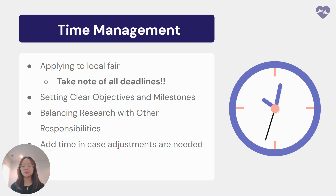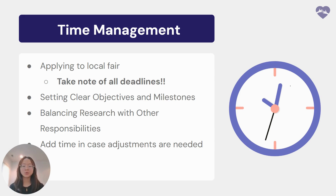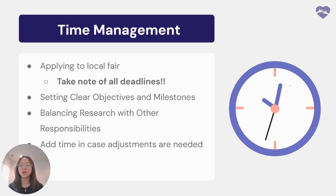Let's break this down into a few key points. First, if you're applying to a local fair, competition, or conference, it's important to take note of all deadlines. These could be submission deadlines, project progress checks, or any requirements related to your participation. Missing a deadline can jeopardize your chances, so be sure to create reminders and keep all key dates in one place, whether through a calendar or a project management app.